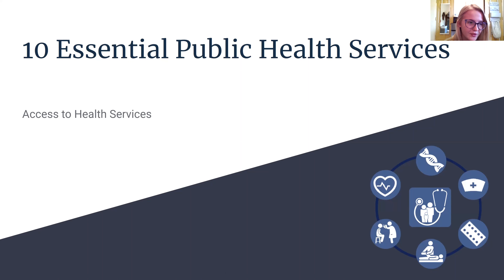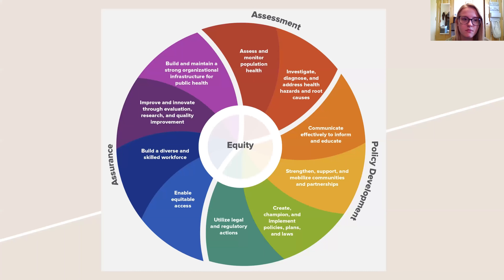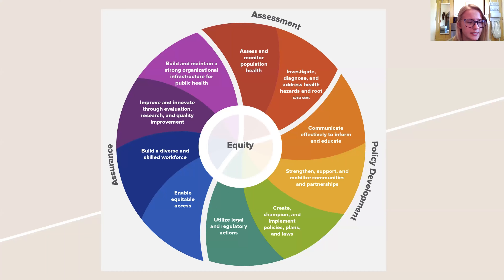The 10 essential public health services were designed to ensure the success of any public health project while promoting and ensuring the health of all involved. They can be used to address any number of public health concerns within a community. All 10 services fall under the fundamentals of assessment, policy development, and assurance — describing the actions that all communities should take to ensure public health.